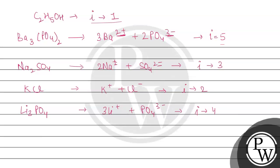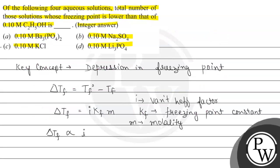We have got the values five, three, two, and four, so the answer will be four, because all four solutions have a higher van't Hoff factor than C2H5OH and therefore lower freezing points. The final answer is four. Hope you understood it well — best of luck!